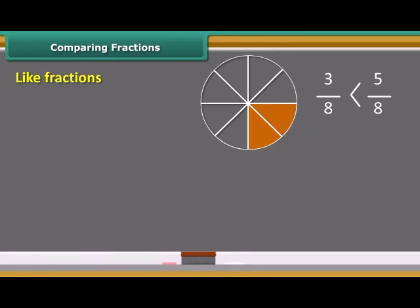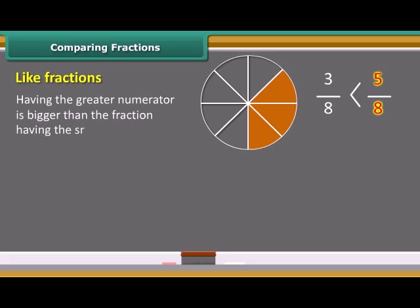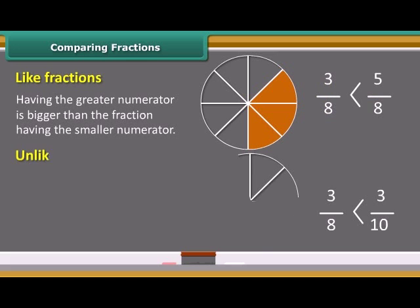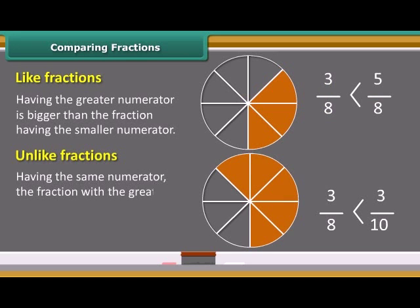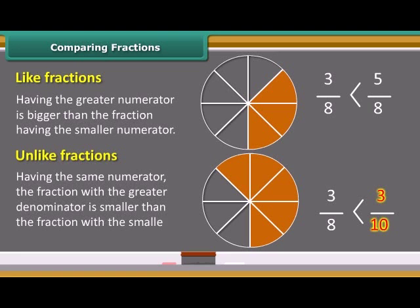In like fractions, the fraction having the greater numerator is bigger than the fraction having the smaller numerator. In case of unlike fractions having the same numerator, the fraction with the greater denominator is smaller than the fraction with the smaller denominator.